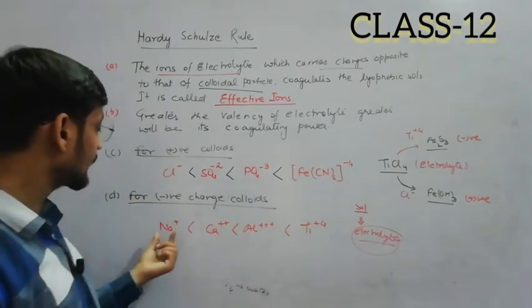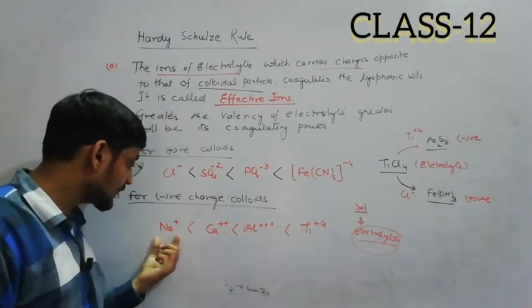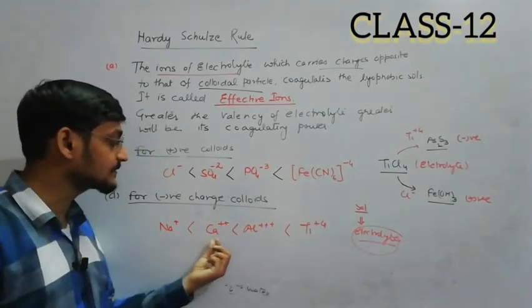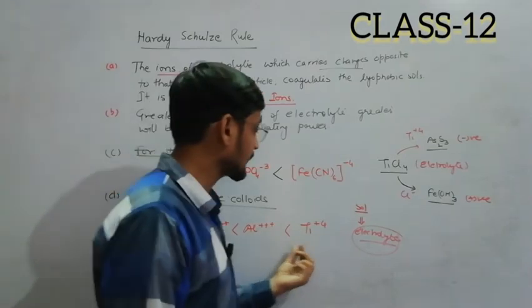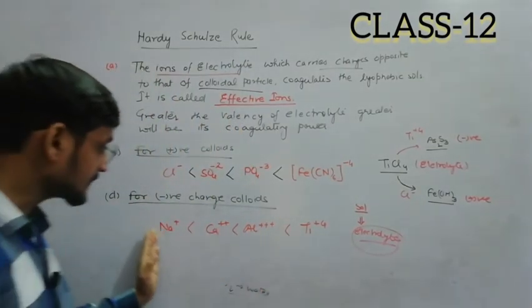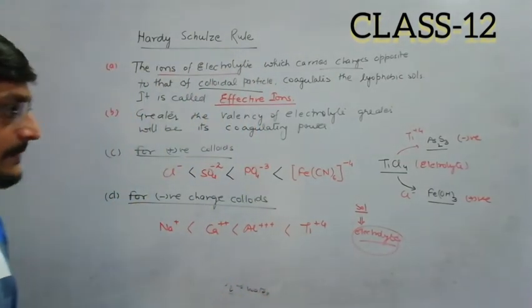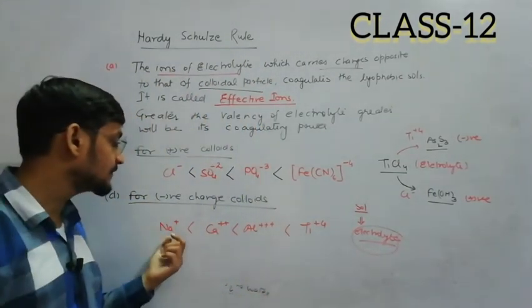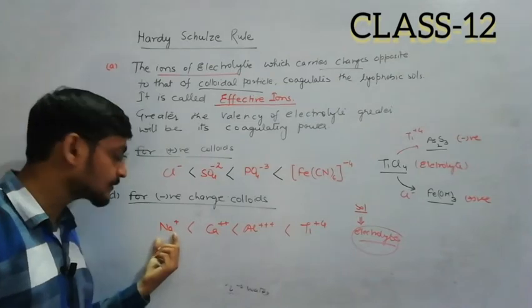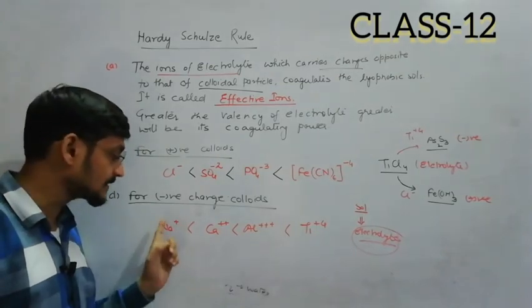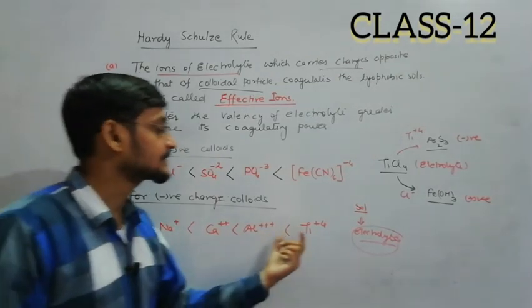For negative colloid particles, we consider positive charges. This has one positive charge, here two positive charges, here three and here four positive charges. The more positive charges, the greater will be the coagulating power for negative colloid.